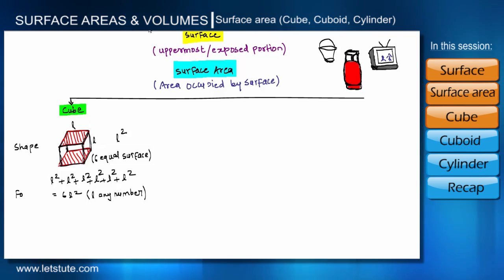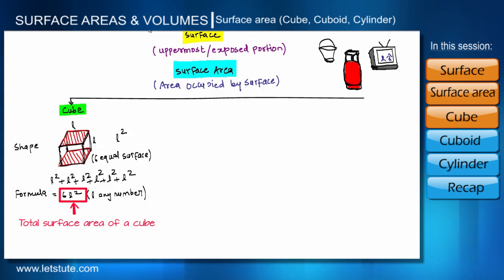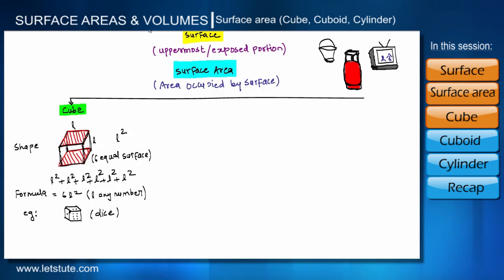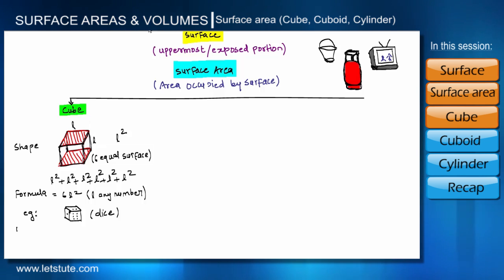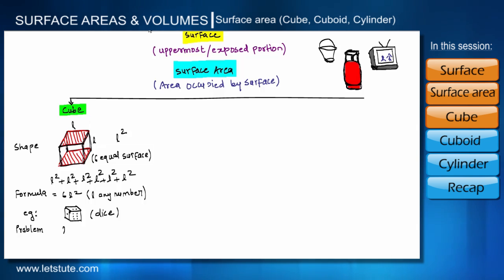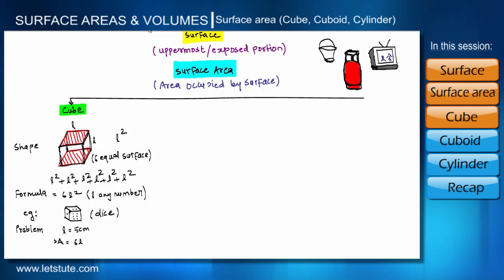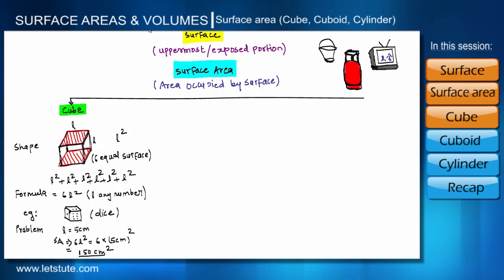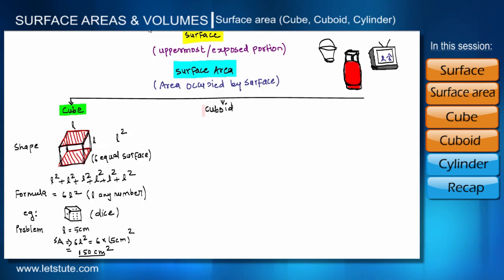A dice is a real-life example of a cube — it has six surfaces, all equal and square-shaped. Let us solve a problem based on this formula. Suppose we are asked to find the total surface area of a cube having side length 5 cm. Using the formula 6L², we get 6 × 5² = 6 × 25 = 150 cm².